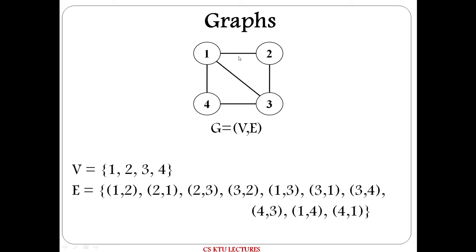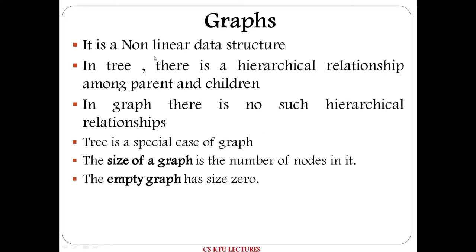This is another example. You would have edges in a direction. The vertex set is {1, 2, 3, 4}. We can say that a graph is a nonlinear data structure. In a tree, there is a hierarchical relationship among parents and children. But in the case of a graph, there is no such hierarchical relationship. A tree is a special case of a graph.